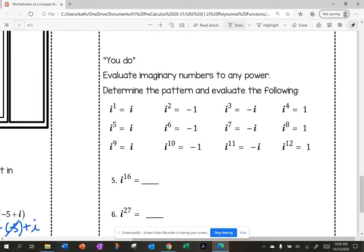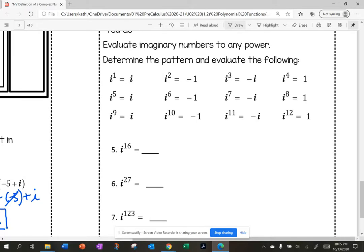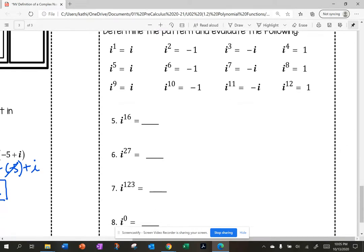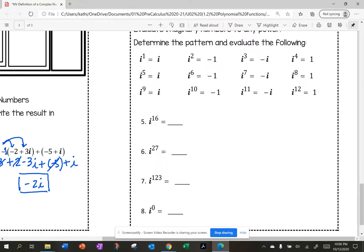In the video we watched, we talked about evaluating numbers to any power. So there's a rotating group of numbers. So i, negative one, negative i, and one. So I really want you to think about this and figure out what the pattern is and then evaluate. What is i to the 16th, i to the 27th, i to the 123rd, and i to the zero. Can you pause the video? I want you to write down what the pattern is. And then how can I solve these? We can see the pattern repeats every four powers. So it is i, negative one, negative i, positive one. Every four powers.